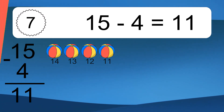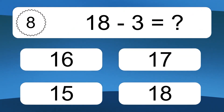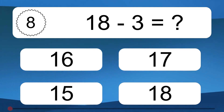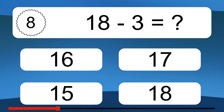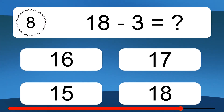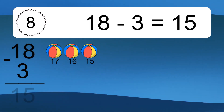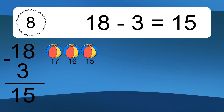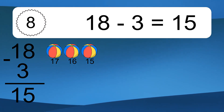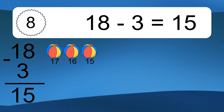18 minus 3 equals what? 18 minus 3 equals 15. Let's count it. 17, 16, 15.